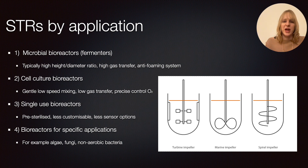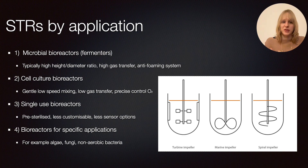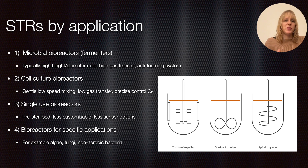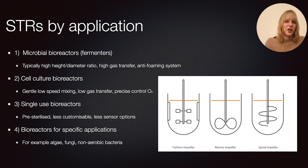Finally, there are bioreactors for very specific applications. Beyond bacteria and cell cultures, you also look at algae, fungi, and plant cells, which have very different requirements in terms of mixing and shear conditions. It's also worth noting that while applications one and two are mainly aerobic systems, there are also non-aerobic bacteria where you don't need a sparger, making the system quite different.